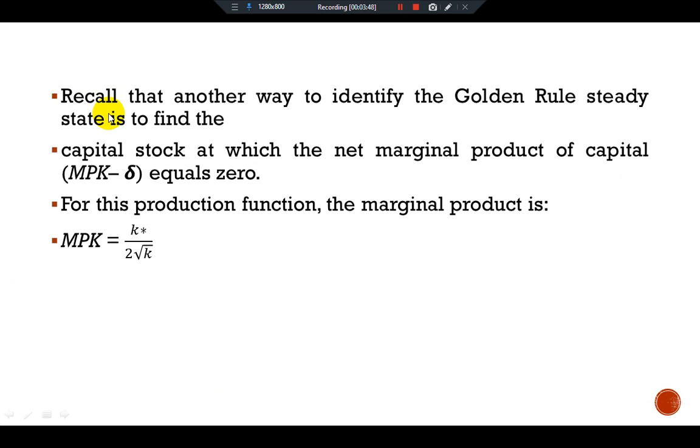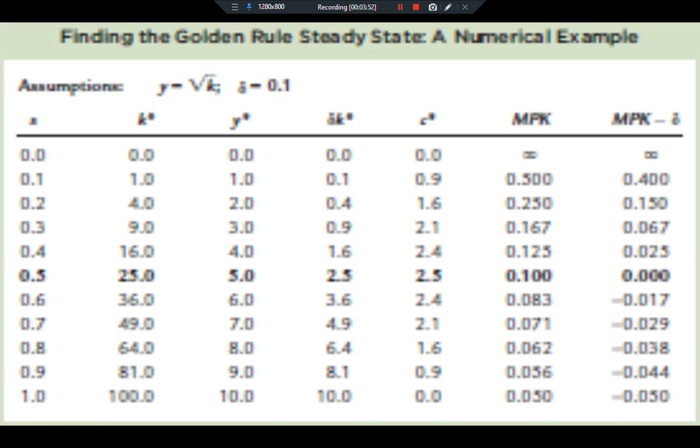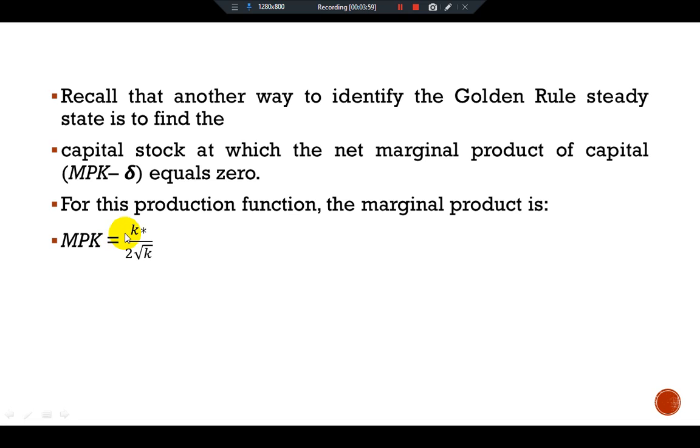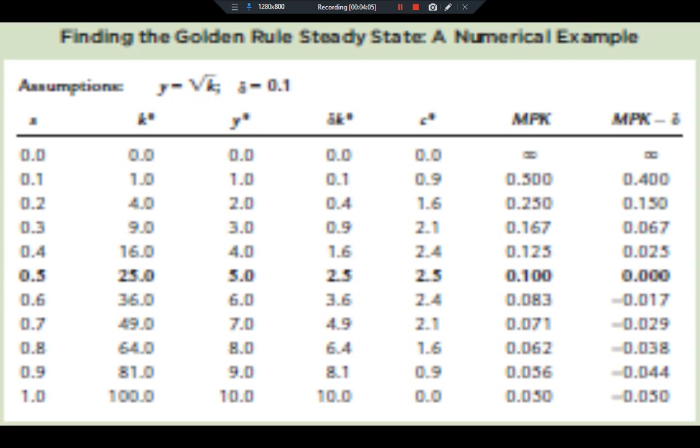Another way to find out the golden rule steady state: this table presents the value of MPK. We have the formula for MPK: MPK equals k static divided by 2 square root k. We have MPK and MPK minus delta in the difference with the help of different steady state situations.